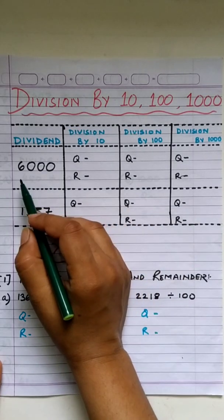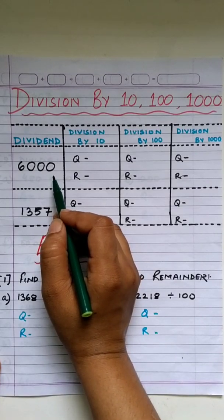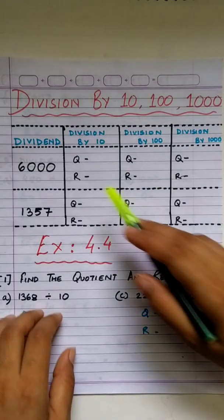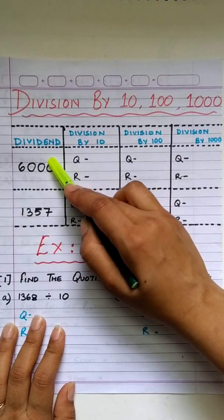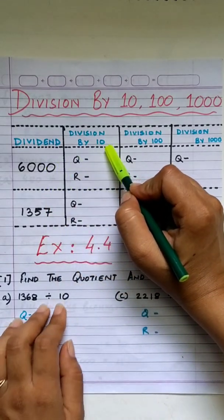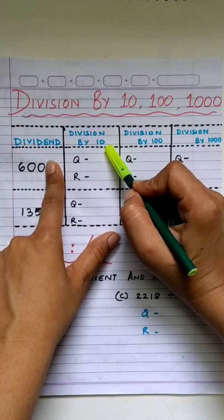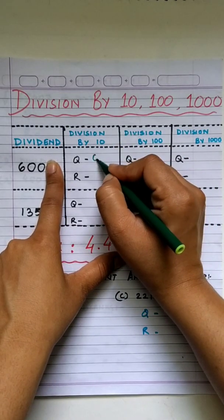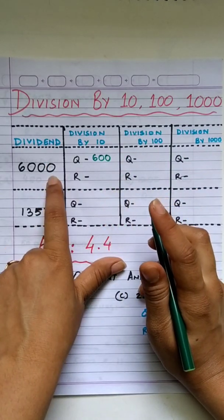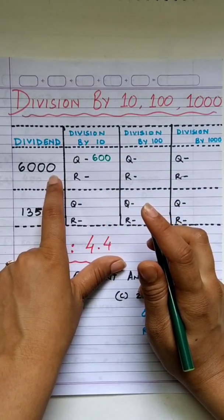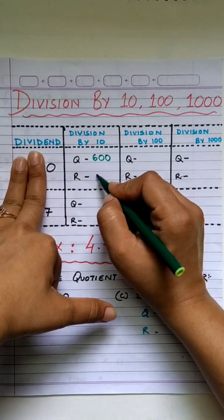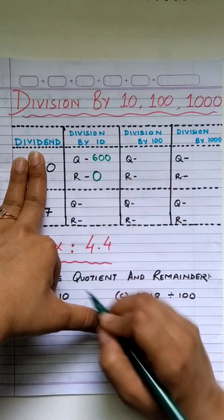The dividend is 6,000. When we divide 6,000 by 10, just hide the last digit and that will be your quotient. Since 10 has one zero, hide one digit of the dividend — the one at the ones place. The digit that you hid becomes your remainder.